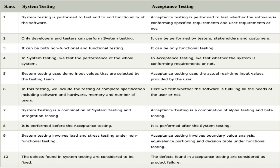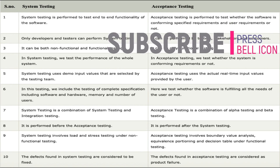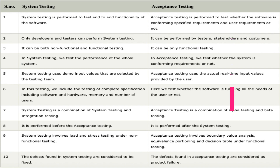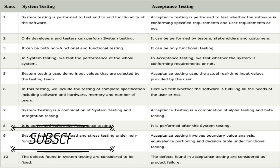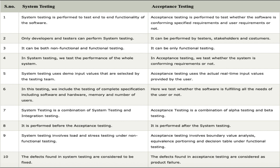Point four: in system testing we test the performance of the whole system, whereas in acceptance testing we test whether the system conforms to the requirements of the client. Point five: system testing uses demo input values selected by the testing team, whereas in acceptance testing real-time input values are provided by the users and the software is tested on those real-time values.